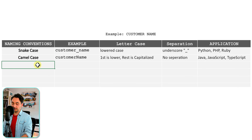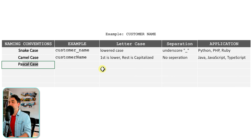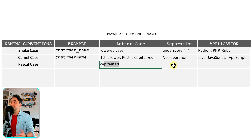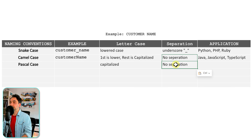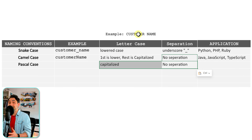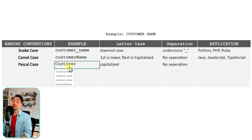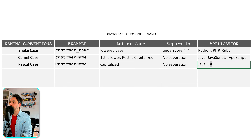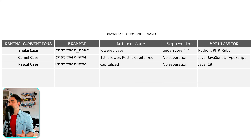The third naming convention is Pascal case, which is very similar to camel case. The rule says all words are capitalized, and there is no separation between words. So applying those two rules to 'customer name,' the first word is capitalized 'Customer,' no separation, then capitalized 'Name' — giving us: CustomerName. Pascal case is used in programming languages like Java and C#. I like this naming convention — I've used it in many projects.